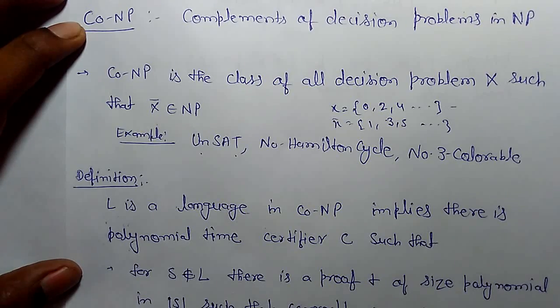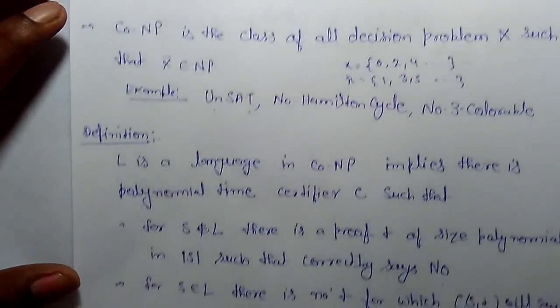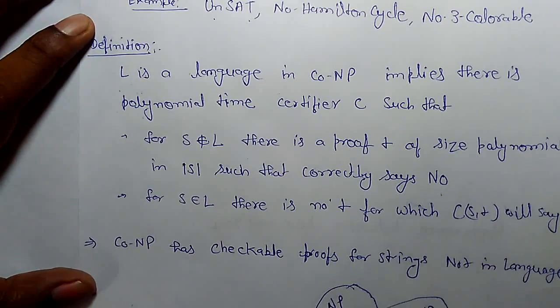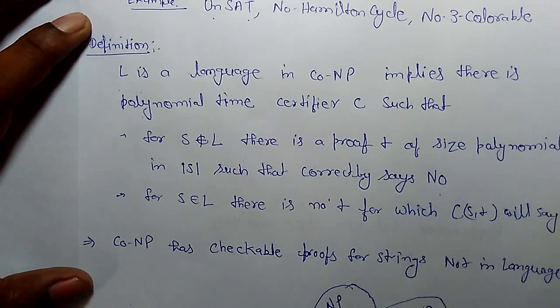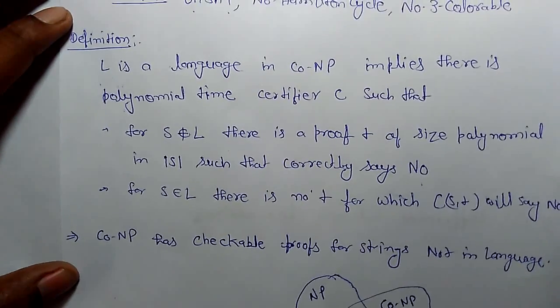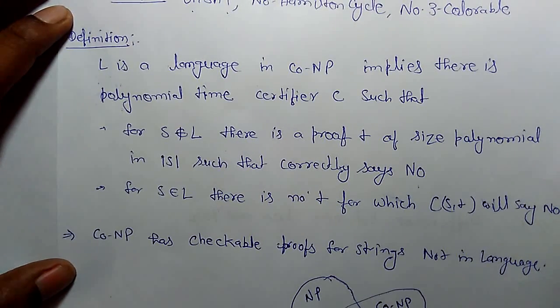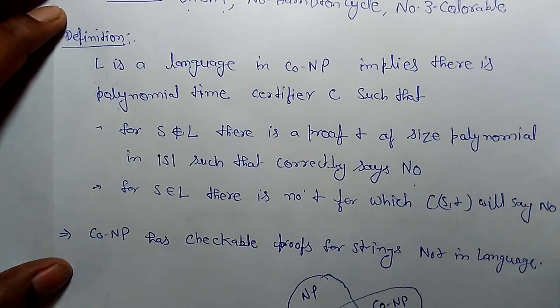Definition of Co-NP: L is a language in Co-NP, which implies there is a polynomial time certifier C such that for s that does not belong to L, there is a proof T of size polynomial in |s| such that C correctly says no. And for s that belongs to L, there is no T for which C will say no.